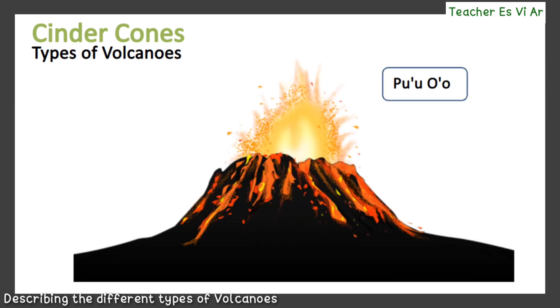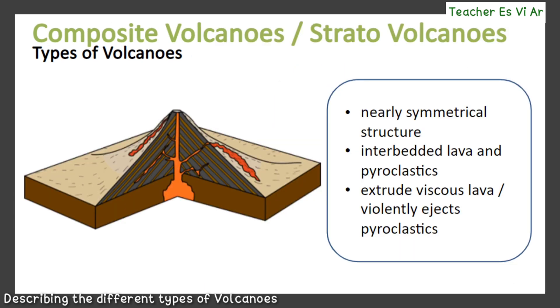Puyu, an active cinder cone in Hawaii, is an example. The third type is the composite or stratovolcano. Composite or stratovolcanoes are volcanoes that are formed from alternating layers of pyroclastics and lava. This type of volcano has viscous lava resulting in more explosive and more dangerous eruptions.